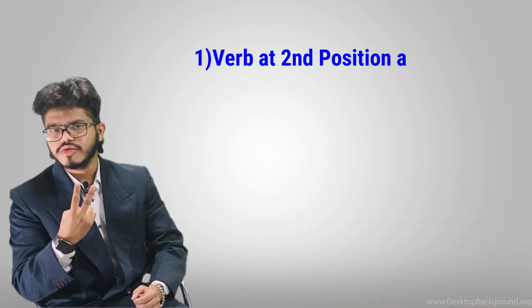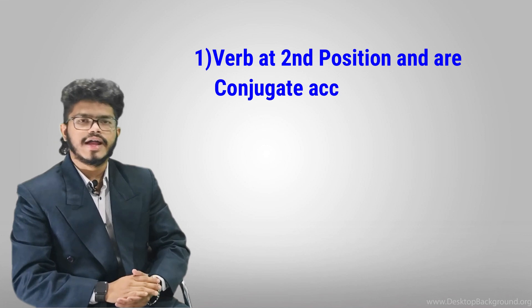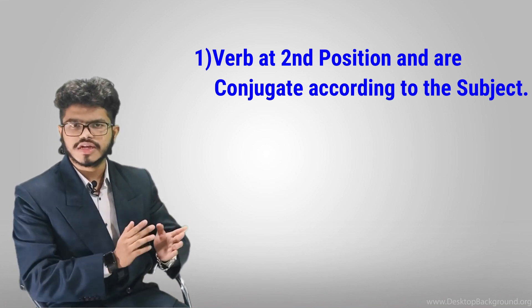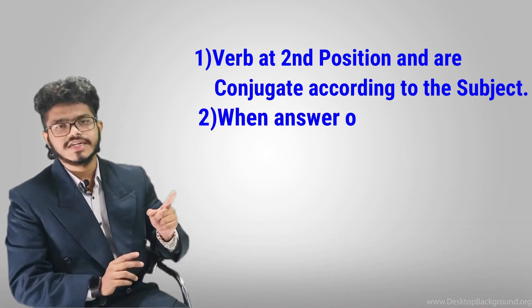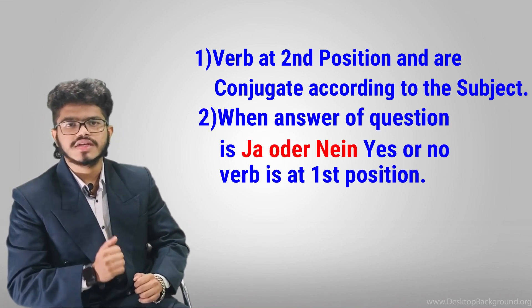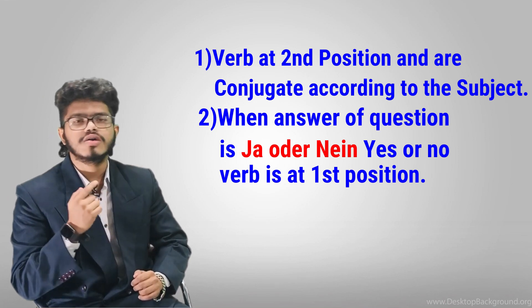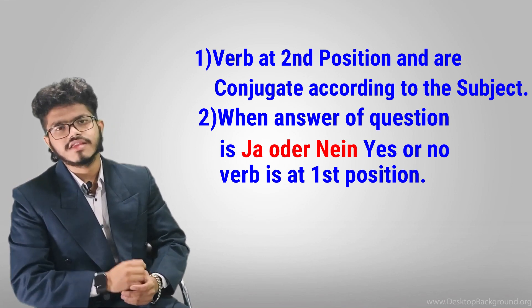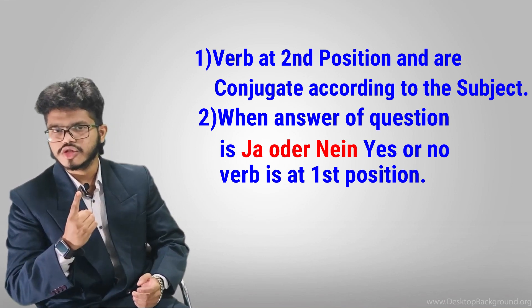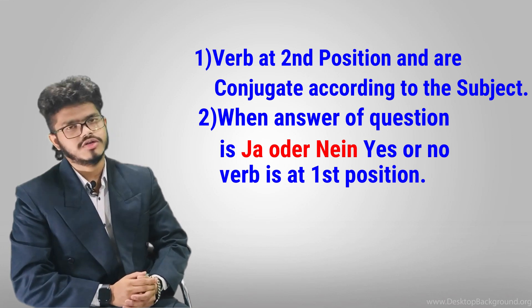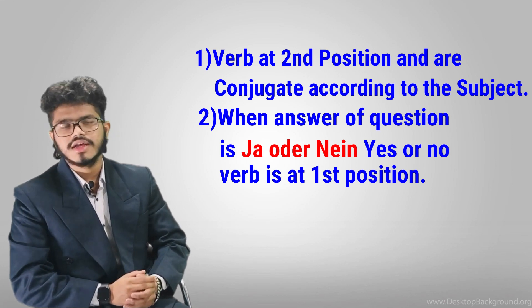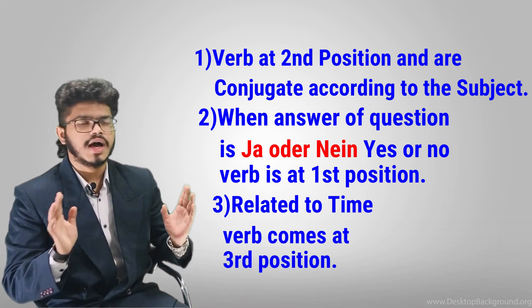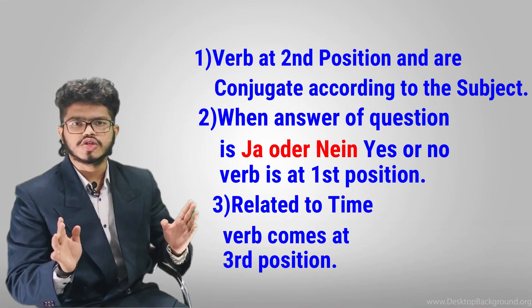So, beginners should always remember: most of the time the verb comes at the second position and is conjugated according to the subject. But when the answer to a question is ja oder nein — yes or no — the verb comes at the first position and is conjugated according to the subject. Anything related to time is placed at the third position.